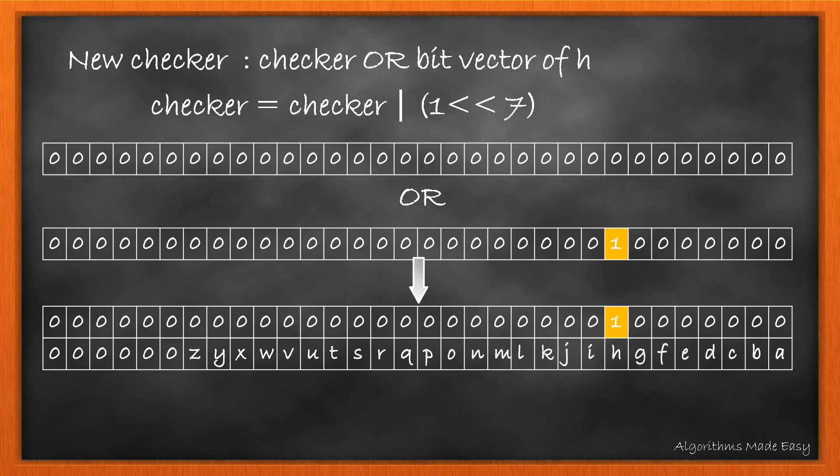Now, we will update the checker. The checker will be the output of its OR operation with the bit vector for the character. At any given time, the bit vector for checker will contain 1s at positions representing the characters we have iterated through till that time.